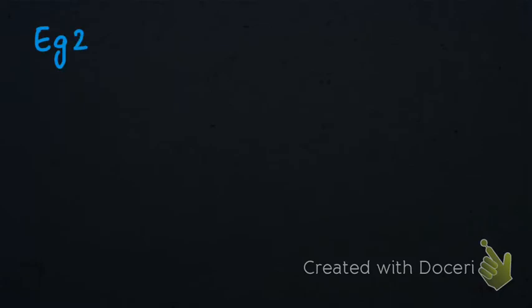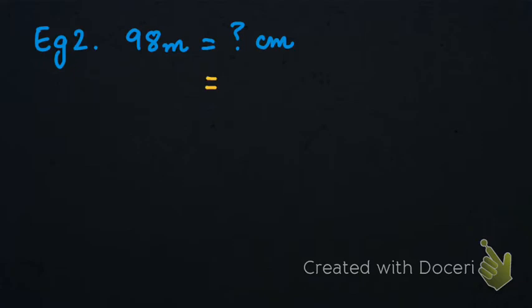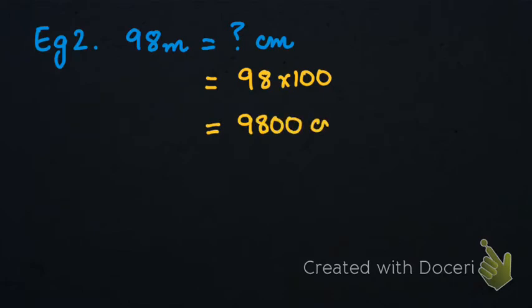Let's do another example. Example number two: we have 98 meters and we have to convert it into centimeters. Simply, we are going to multiply 98 by 100 and we get the answer 9800 centimeters. So in 98 meters we have 9800 centimeters.